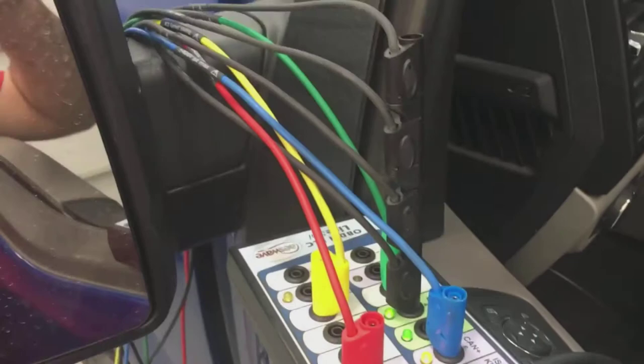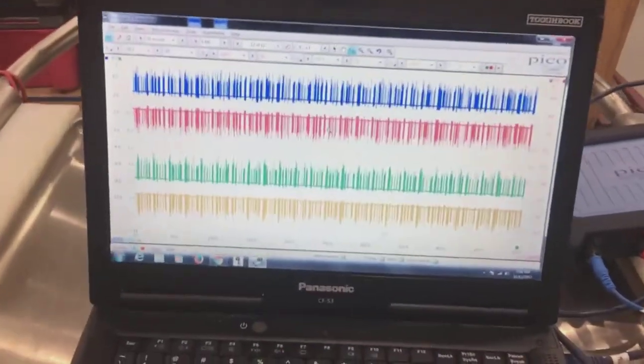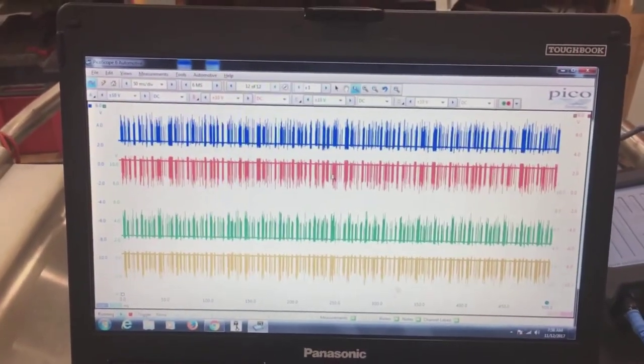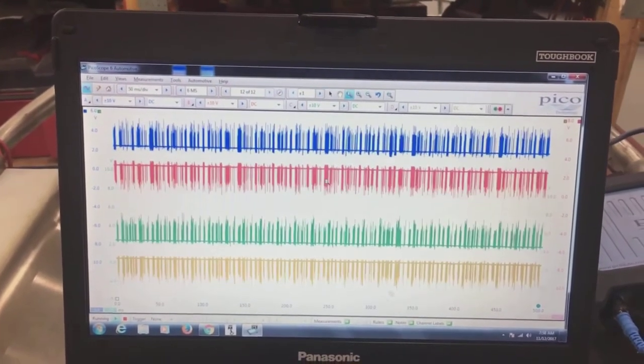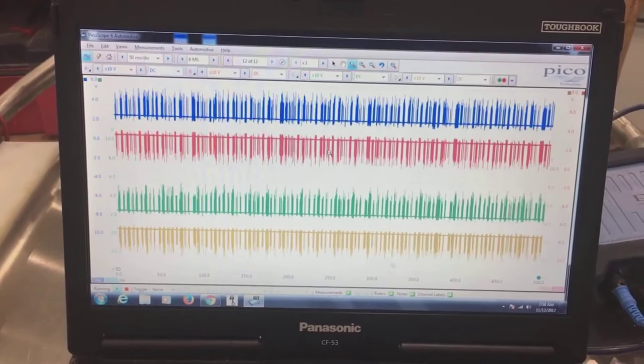But here's how we have it hooked up. We have our ground all piggybacked and we have all of our four channels on there. And here's what it looks like at 50 milliseconds. The blue and the red are high-speed CAN high and low, and the green and the yellow are our medium speed CAN.